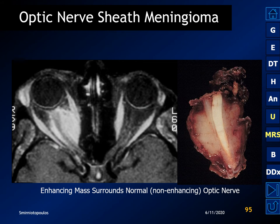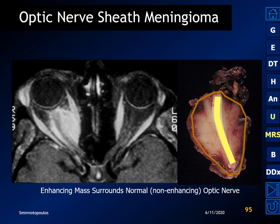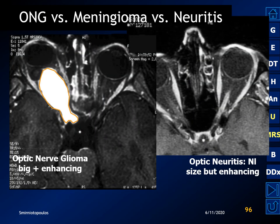Here is a beautiful example of radiologic-pathologic correlation — an optic nerve sheath meningioma where the enhancing mass surrounds a non-enhancing but normal optic nerve. In contrast, an optic nerve glioma shows a fusiform mass that enhances, and we don't see the optic nerve running through the middle because the mass is the optic nerve.